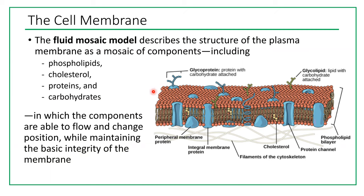The cell membrane is called a fluid mosaic membrane — this term describes its structure. Mosaic means it includes different components: phospholipids, cholesterol shown in yellow, proteins shown in blue, and carbohydrates shown in green. Because it's made from different components, it's a mosaic. And it's fluid because those components are able to flow and change position while maintaining the basic integrity of the cell membrane.